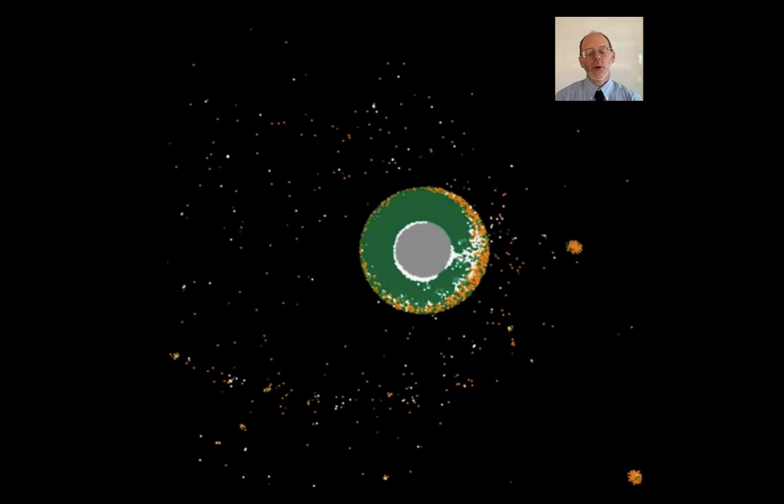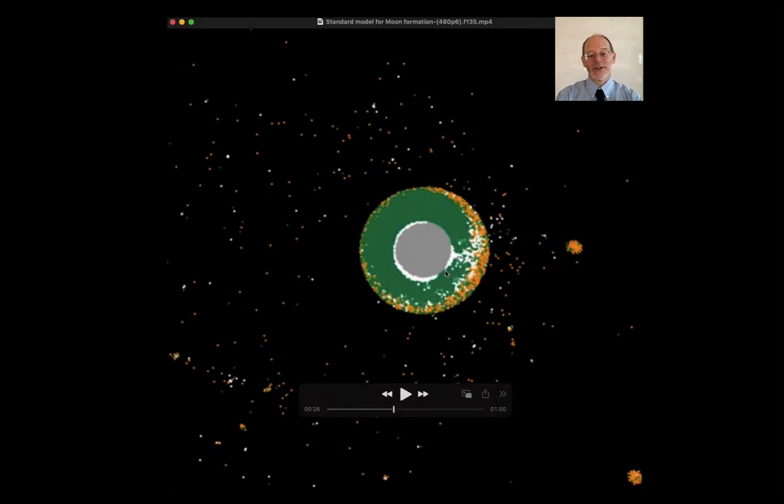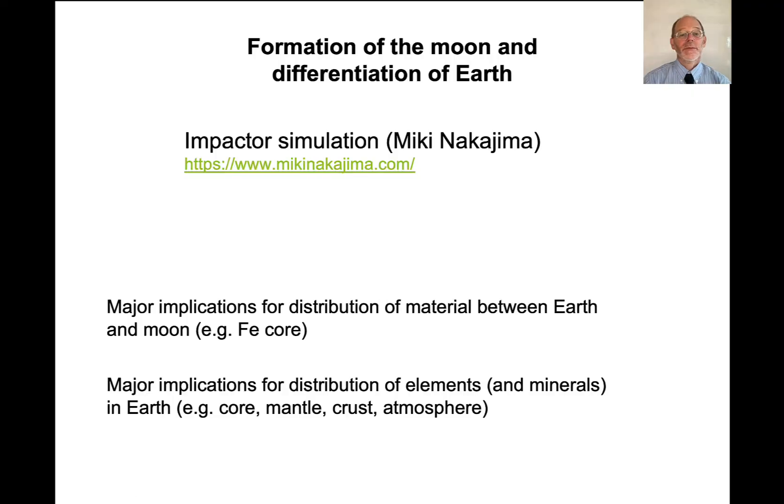All of this material outside the Earth condenses to form the Moon. Of course, the Moon has a much smaller mass than the Earth. And if it does have a core, it's a much smaller core. Why is the core of the Moon so small? It's because almost all the core of the impactor went into the to form the core of the Earth.